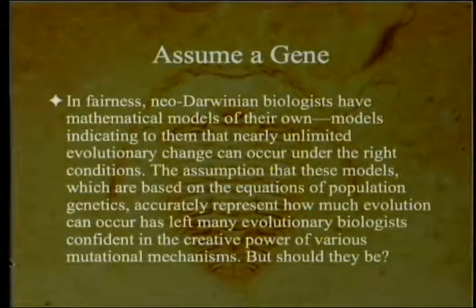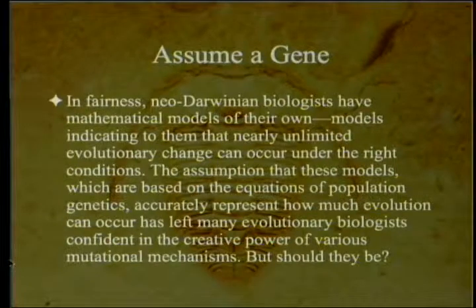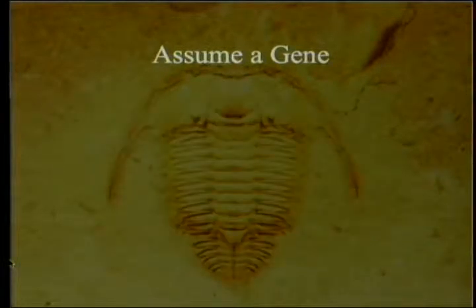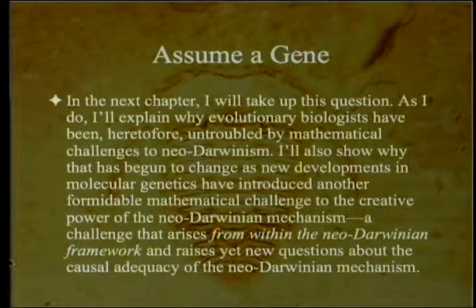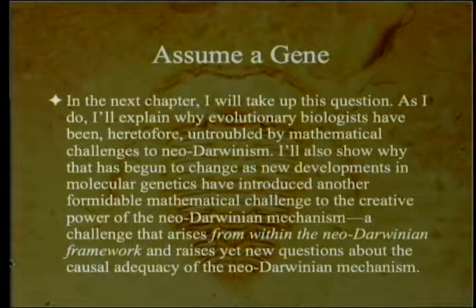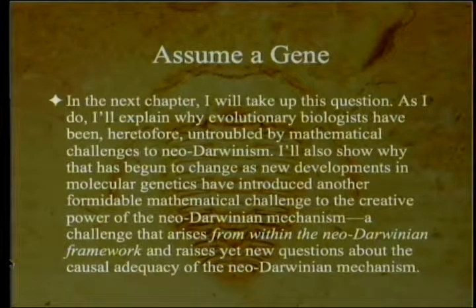The assertions about exon shuffling, like many statements about postulated mutational mechanisms, blur the distinction between theory and evidence. The papers Long cites are often neither mathematical demonstration nor experimental evidence of the power of these mechanisms to produce significant gains in biological information. In fairness, neo-Darwinian biologists have mathematical models of their own — based on equations of population genetics — indicating that nearly unlimited evolutionary change can occur under the right conditions, leaving many evolutionary biologists confident in the creative power of mutation. But should they be? In the next chapter, Meyer takes up this question and explains why new developments in molecular genetics have introduced another formidable mathematical challenge to the neo-Darwinian mechanism — a challenge arising from within the neo-Darwinian framework itself.